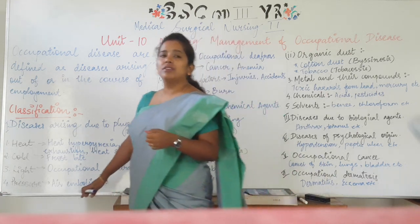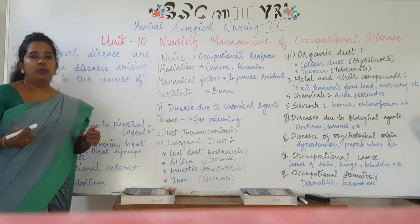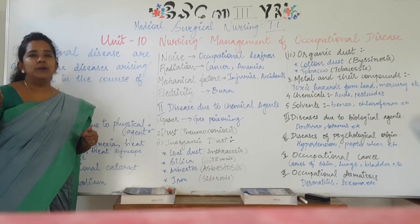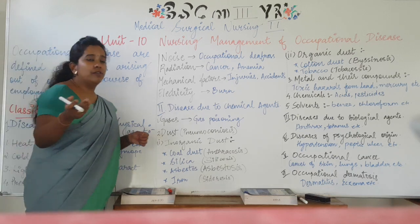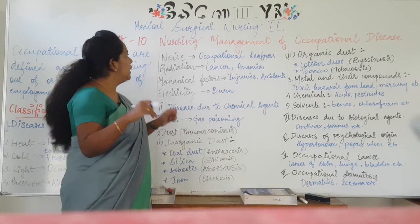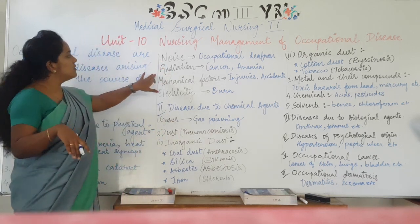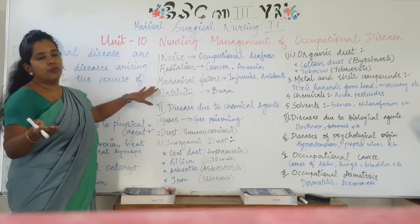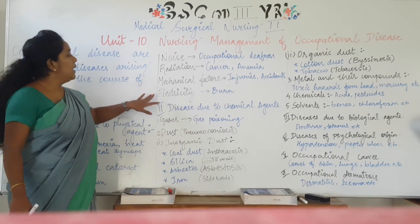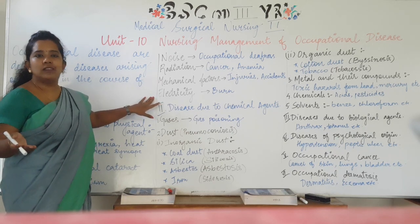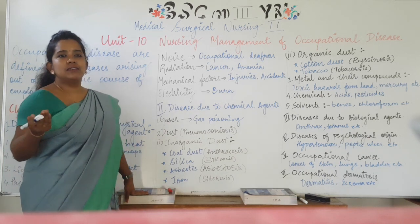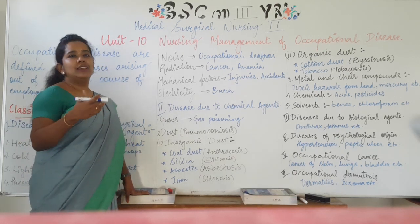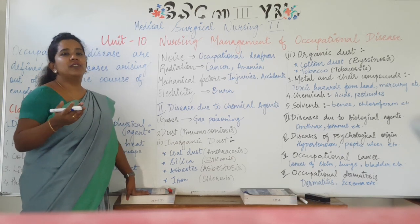Next is pressure — due to pressure, there are high chances of air embolism, a condition when an air molecule or fat molecule passes into the blood vessels, which can happen because of certain pressure conditions a person is working in. Noise can cause occupational deafness. Radiation can cause cancers, burns, and anemia. Mechanical factors can cause injuries or accidents, and electricity can cause electrical shock or electrical burns. These are all examples of occupational disorders caused by physical agents.